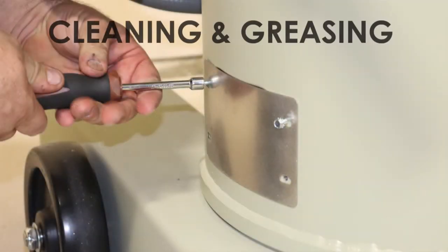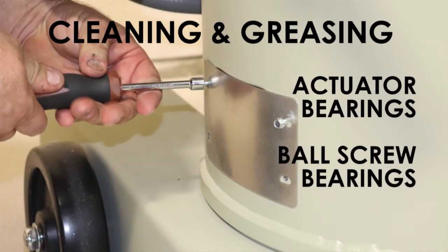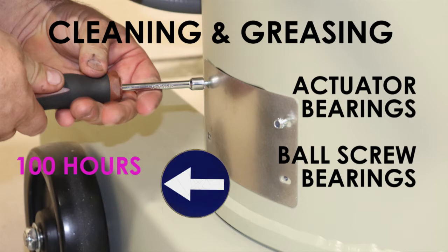Cleaning and greasing the actuator and ball screw bearings should be done every 100 hours of machine time or every 12 months, whichever comes first.